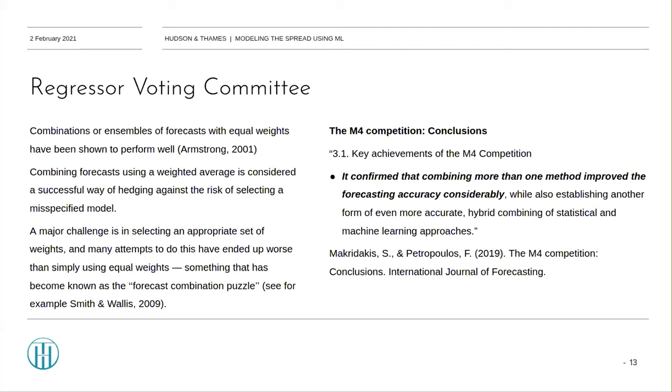Regressor voting committee. Combinations or ensembles of forecasts with equal weights have been shown to perform well, and considered a successful way of hedging against the risk of selecting a misspecified model. A very recent affirmation of this approach was a paper that discussed the findings from the latest Makridakis forecasting competition results. The Makridakis forecasting competition happens every few years. It basically enables researchers from all over the world to try and tackle large-scale multivariate forecasting problems on datasets from multiple sectors, including finance. One of the key achievements of the M4 competition is that it confirmed that combining more than one forecasting method improved the final accuracy considerably.